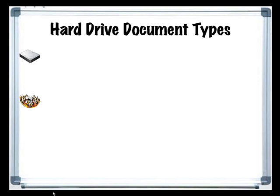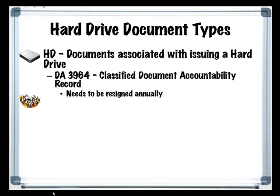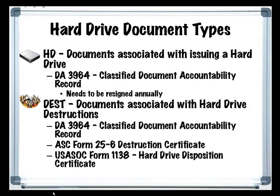The database also maintains hard drives from point of issue until their destruction. Hard drives are issued using DA3964s, which are classified document accountability records — these document numbers begin with HD. The documents need to be re-signed annually, and the database main menu will remind you when a document needs to be re-signed or turned in. There is quite a bit of paperwork when a classified hard drive is destroyed, and this database generates several forms for the destruction, all sharing the same document number starting with DST. It will mark your original DA3964 with the necessary destruction information, and also generate an ASC Form 25-6 Destruction Certificate and a USSOC Form 1138 Hard Drive Disposition Certificate.